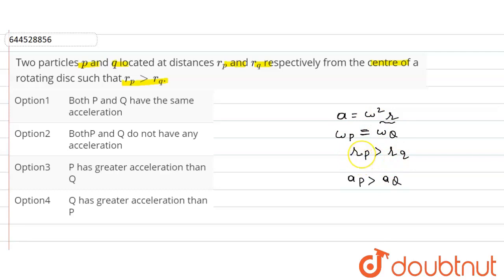So acceleration of P is greater than the acceleration of Q. So see here, P has the greater acceleration than Q. So here option third is our correct option. Q has greater acceleration than P, this is incorrect. Both P and Q do not have any acceleration, incorrect. Both P and Q have the same acceleration, incorrect. So only correct option is option third.